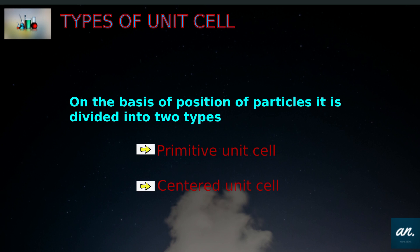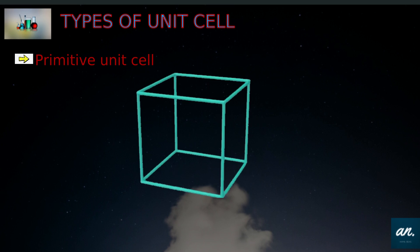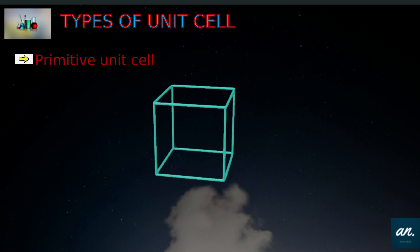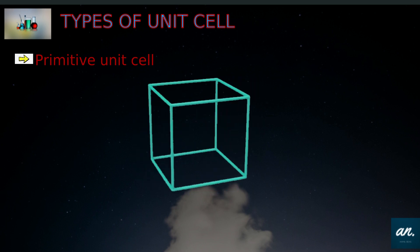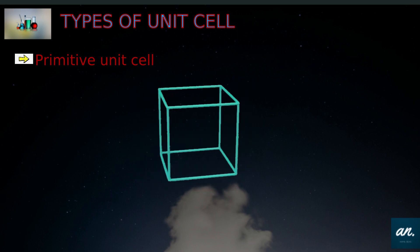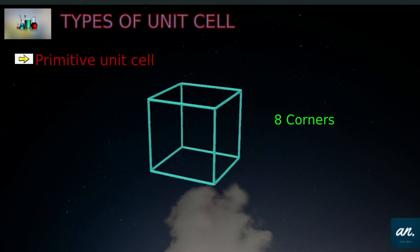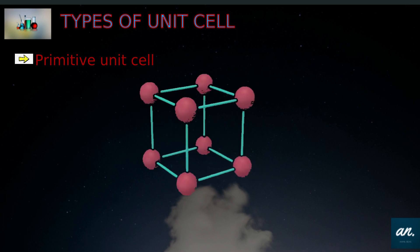Now we discuss primitive unit cell. What is a primitive unit cell? Look at the picture — there is a cube. A cube has eight corners. In those eight corners, the particles are present. That type of unit cell is called a primitive unit cell.